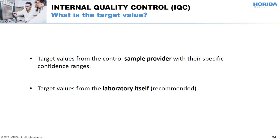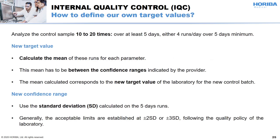What is the target value for the IQC? The target values can come from either the control sample provider or the laboratory itself. The second option is recommended because the provider's target values can have higher confidence ranges, due to the fact that they have to account for inter-instrument variations. To define its own target values, the laboratory will have to simultaneously run the new control sample batch and the current one over at least 5 days. The mean of those results will become the new target value, and the confidence range will be calculated by the SD of those runs. According to its quality policy, the laboratory can choose ±2 or ±3 SD as the confidence range.